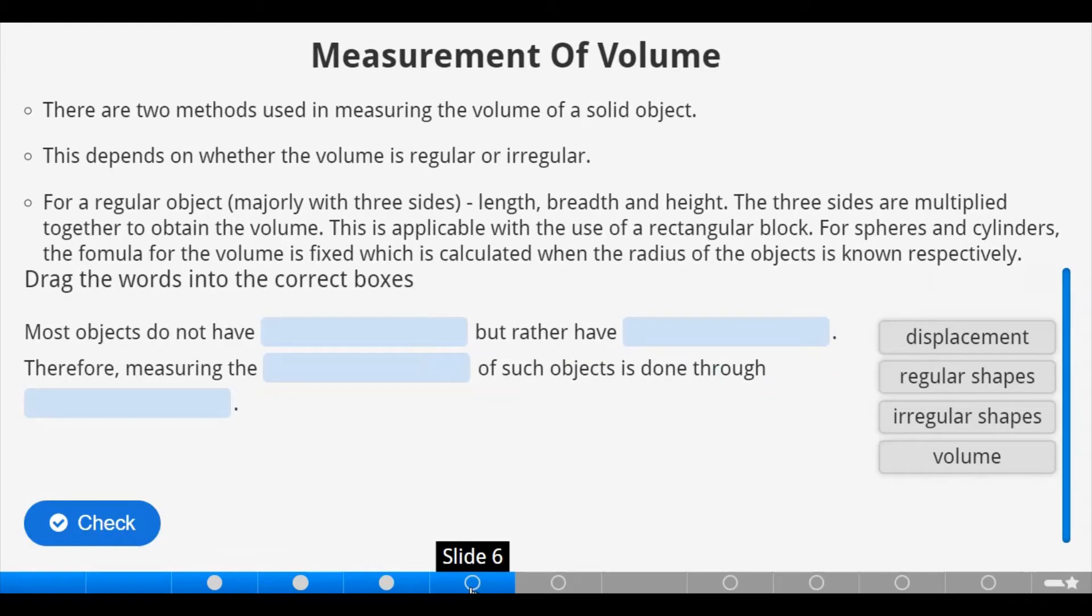Measurement of volume. There are two methods used in measuring the volume of a solid object. This depends on whether the volume is regular or irregular. For regular objects, with three sides, that is, length, breadth and height, the three sides are multiplied together to obtain the volume. This is applicable with the use of a rectangular block. For spheres and cylinders, the formula for the volume is fixed, which is calculated when the radius of the object is known respectively. Let's do this activity by dragging the words into the correct boxes.